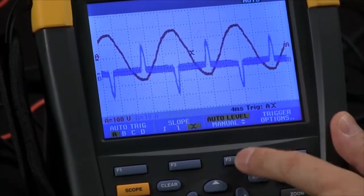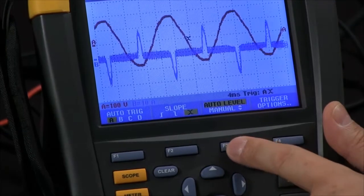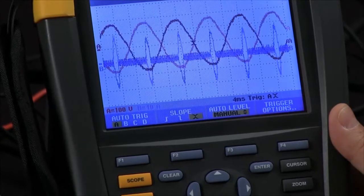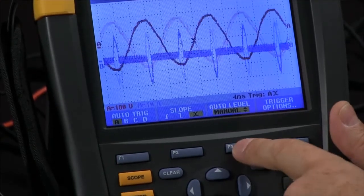You can also go from an auto level. If you wanted to trigger at a specific location on the curve, you would go into manual mode, allowing you to make adjustments as to exactly where your waveform is going to trigger.